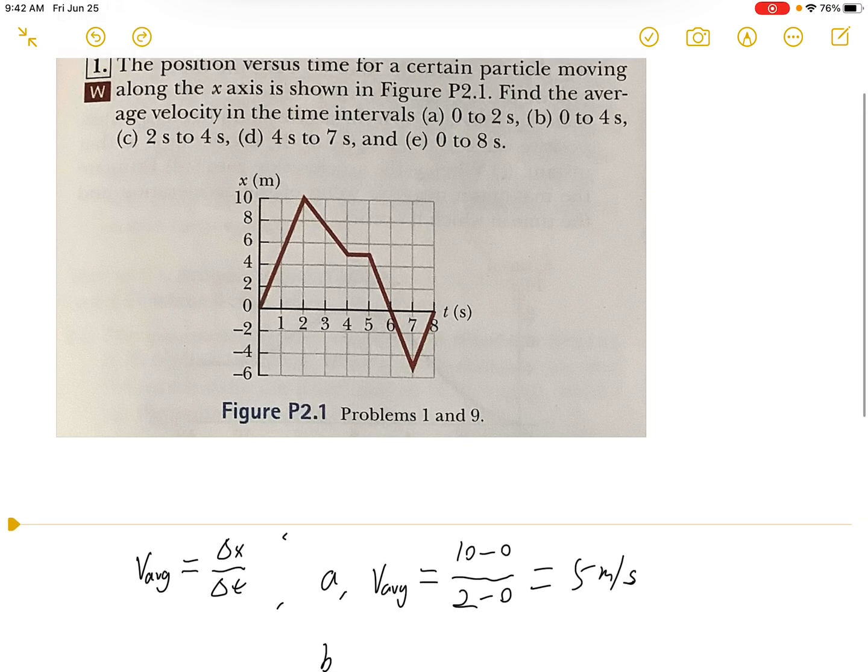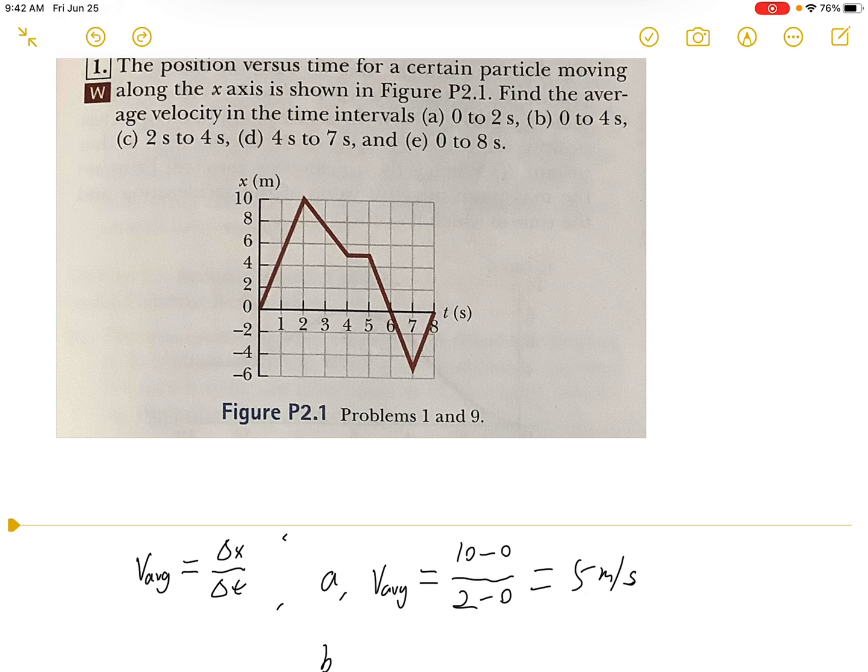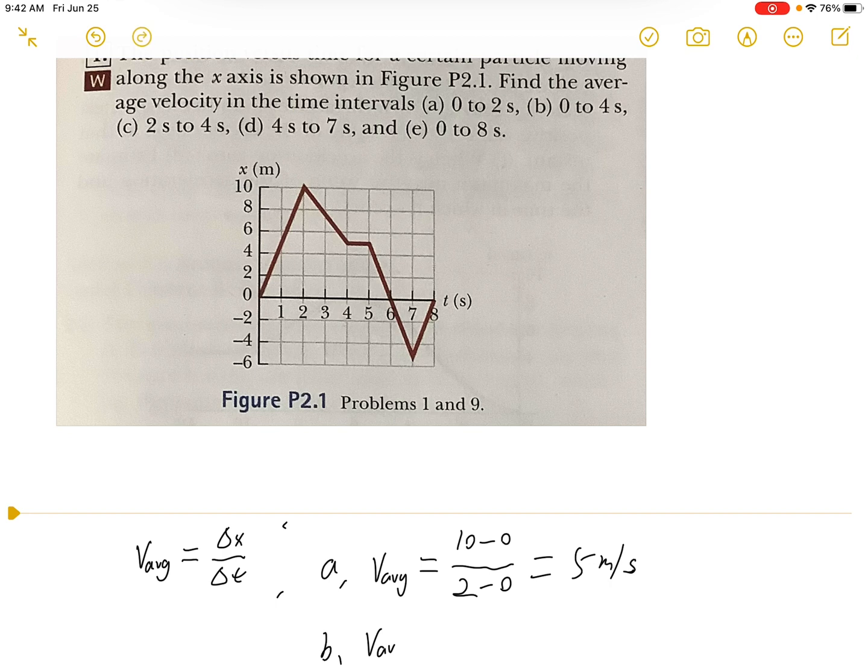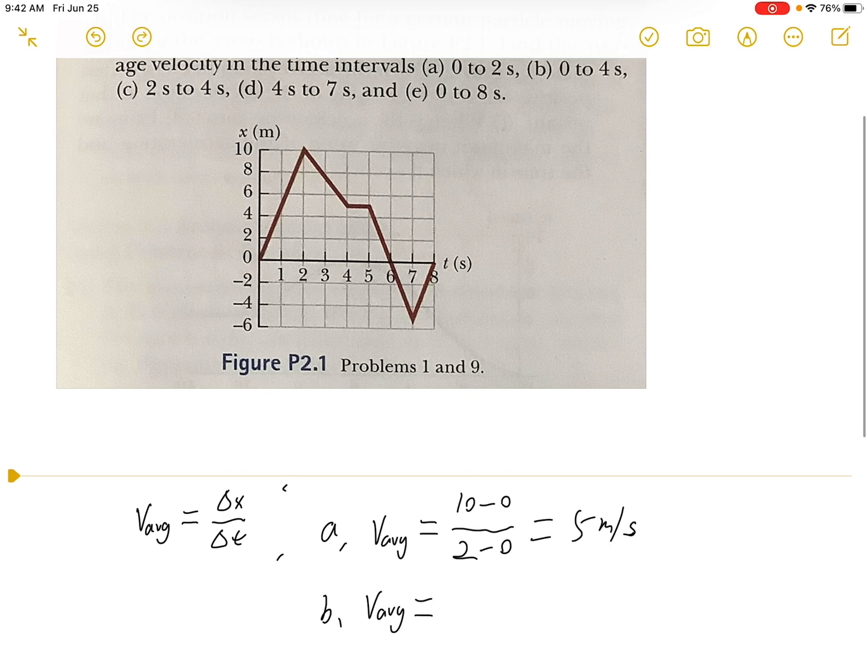For part b, we'll do the same thing. The average velocity equals 5 minus 0 over 4 seconds minus 0 seconds. So we get 1.25 meters per second.